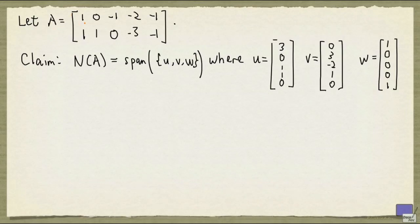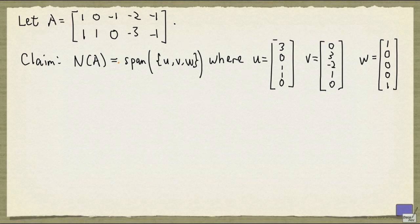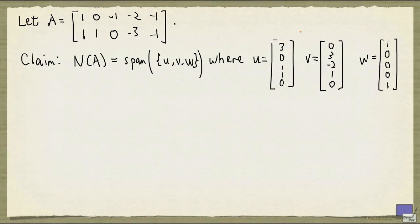Let A be the matrix with 1, 0, -1, -2, -1 in the first row and 1, 1, 0, -3, -1 in the second row. Suppose that someone claims that N(A) is given by the span of the set u, v, and w, where u, v, and w are given here.